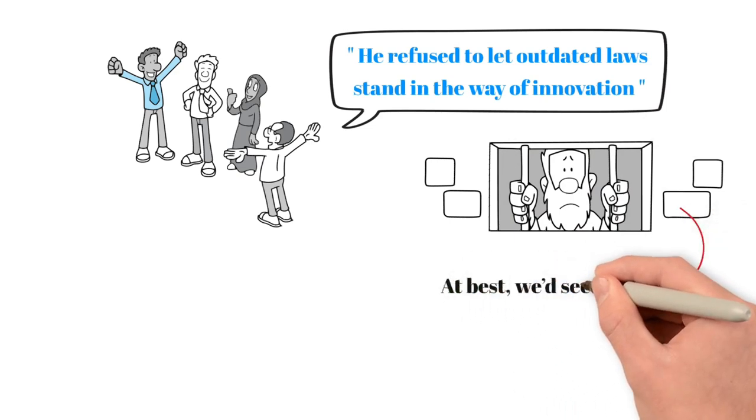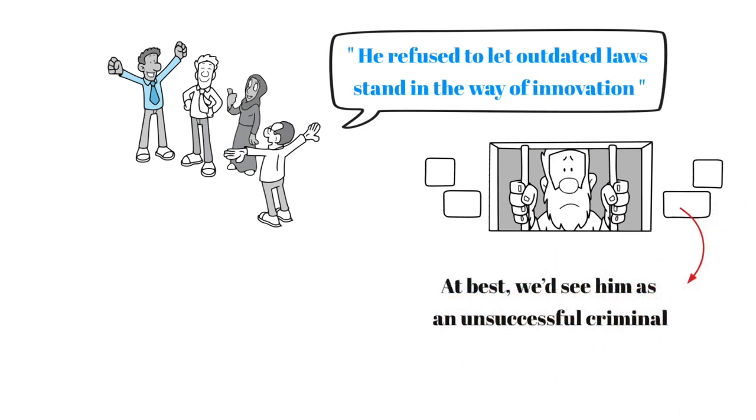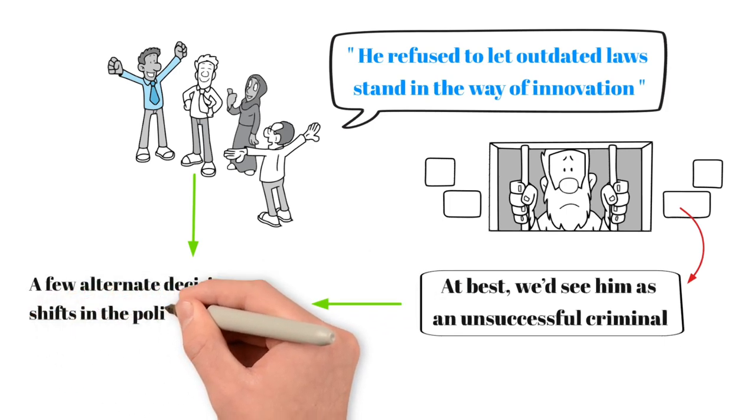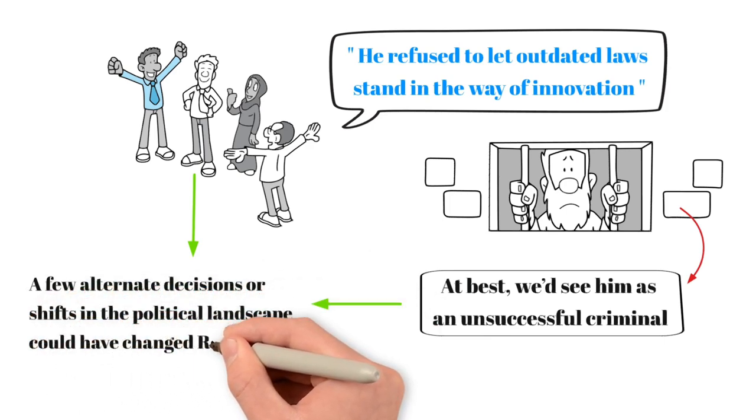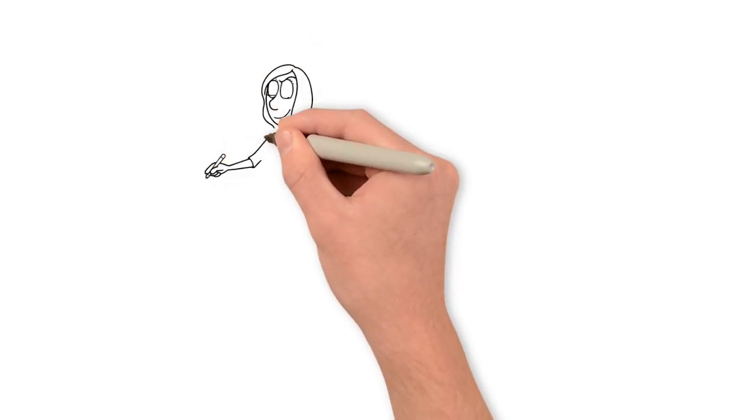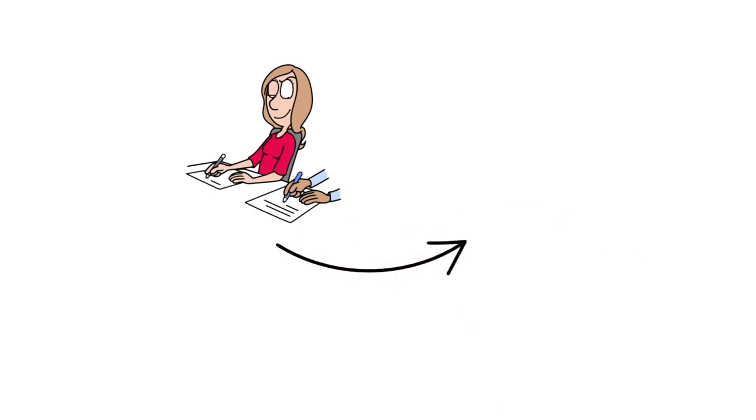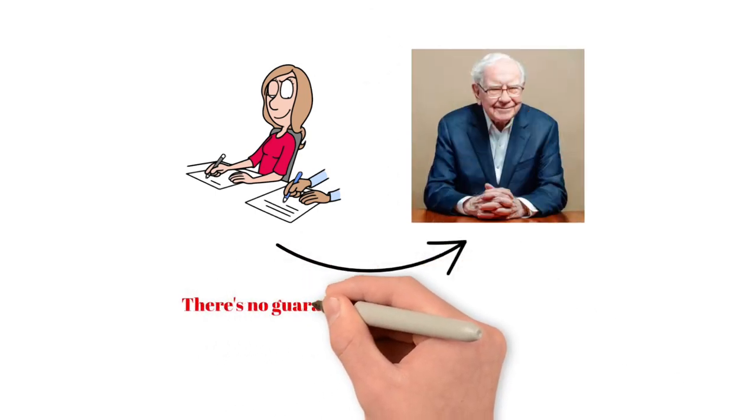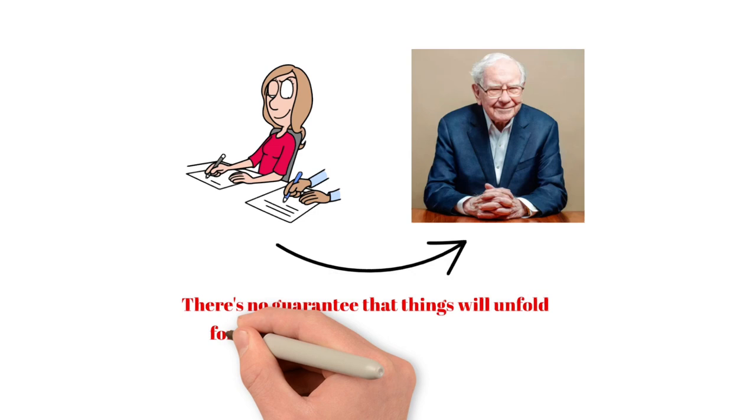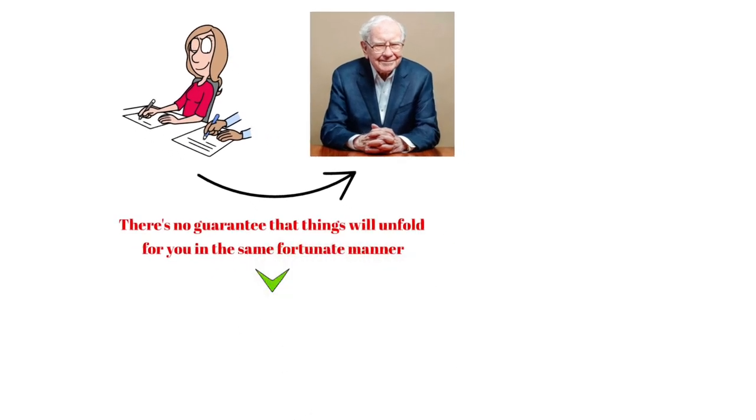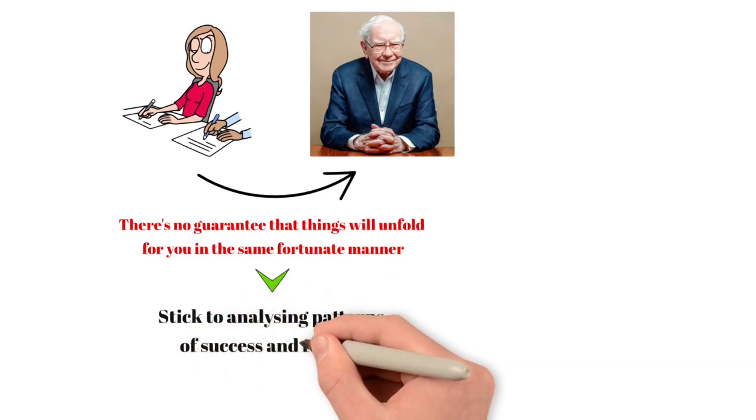But what if he'd failed? Would we still think that Rockefeller's example is one we should follow? Probably not. At best, we'd see him as an unsuccessful criminal. Ultimately, the distinction between these two outcomes boils down to luck. A few alternate decisions or shifts in the political landscape could have changed Rockefeller's fate. What's crucial is that replicating good luck is nearly impossible. Even if you copy every career move of someone like Warren Buffett, there's no guarantee that things will unfold for you in the same fortunate manner. So here's the alternative: Stick to analyzing patterns of success and failure.